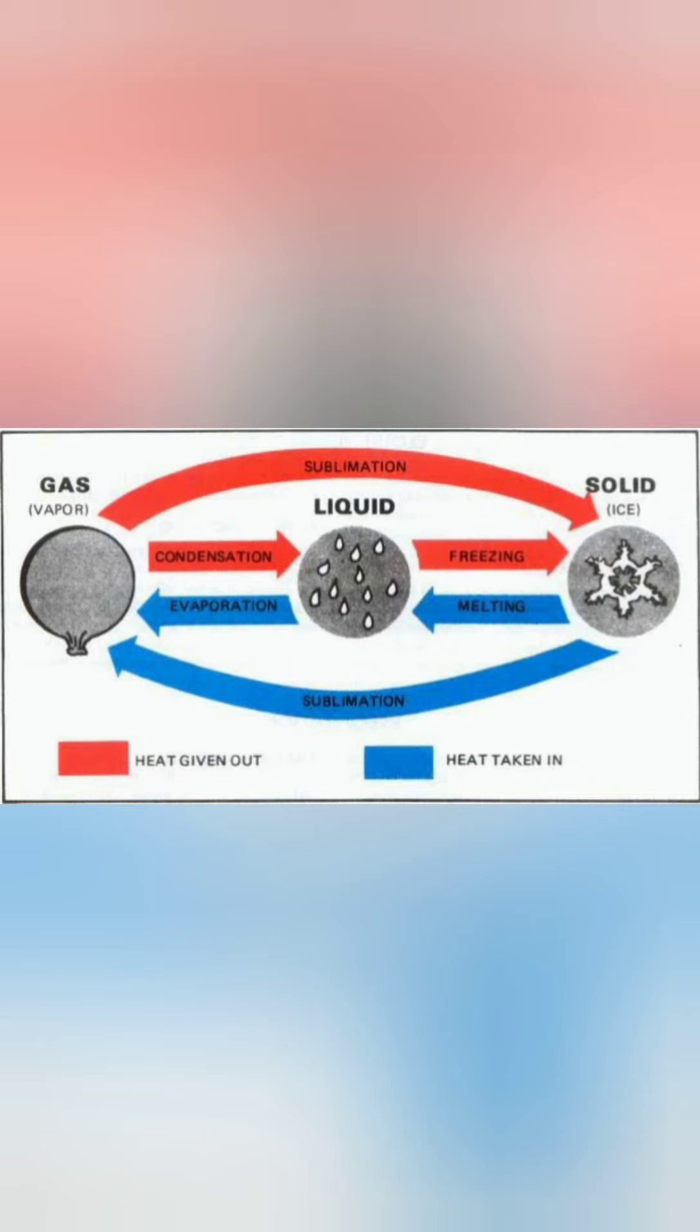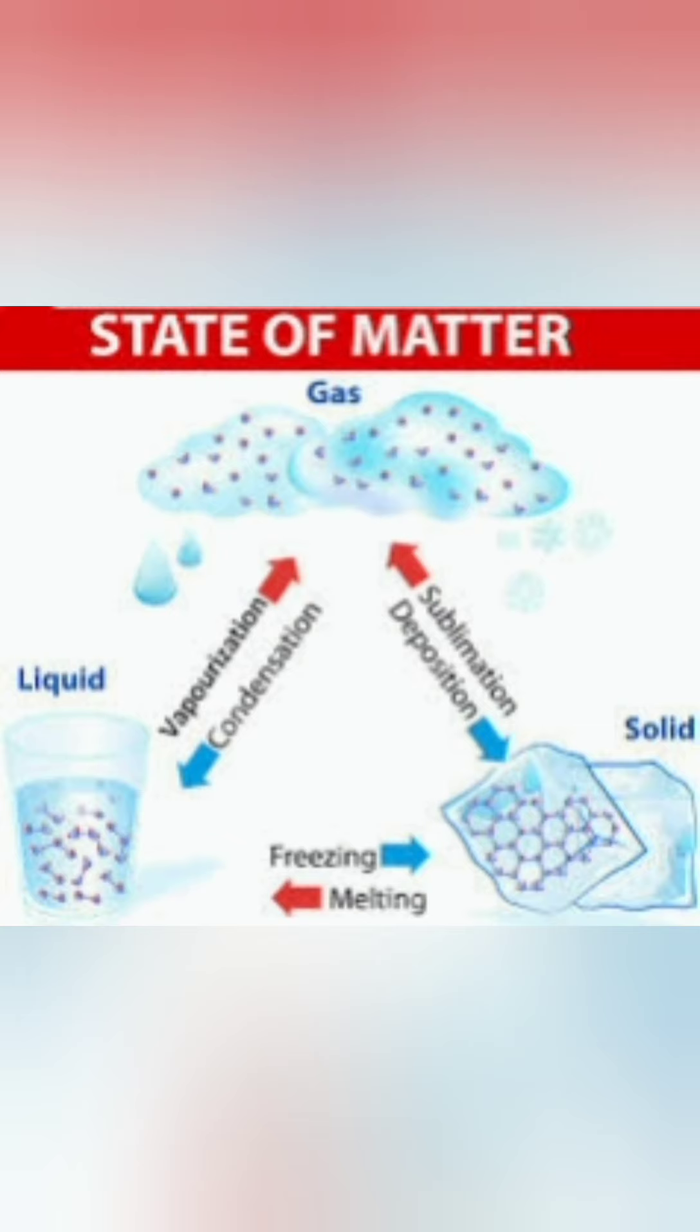When a solid on heating changes directly into vapor at a fixed temperature, the process is called sublimation. Similarly, the change directly from vapor to solid at a fixed temperature is called deposition. The change of state from liquid to gas at all temperatures is called evaporation.